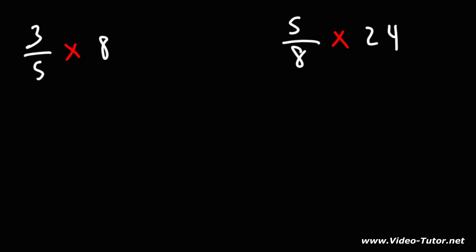So let's start with the first example. 3 over 5 times 8. So we can write it as 3 over 5 times 8 over 1. And then we could multiply across. 8 times 3 is 24. 5 times 1 is 5. So that's going to give us the answer 24 over 5 as an improper fraction.